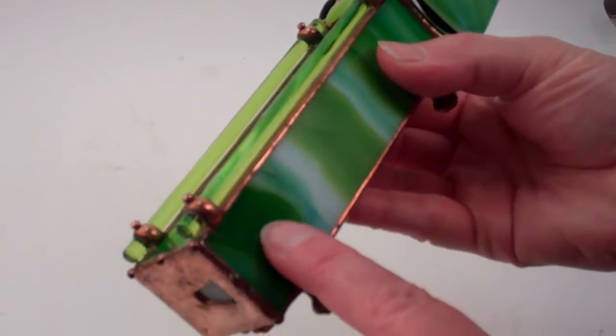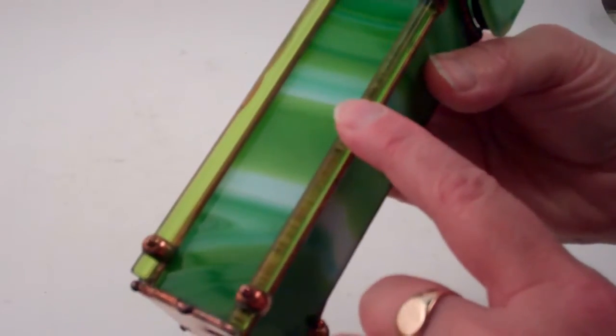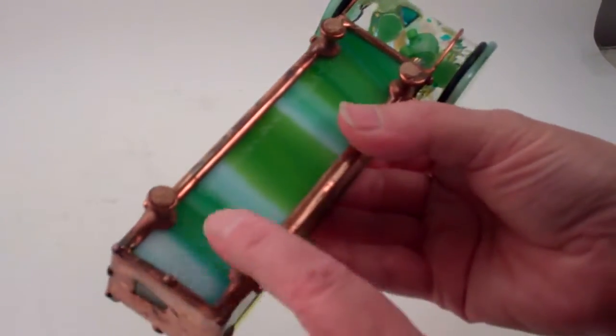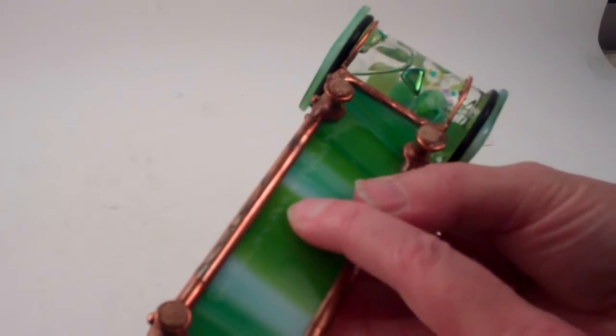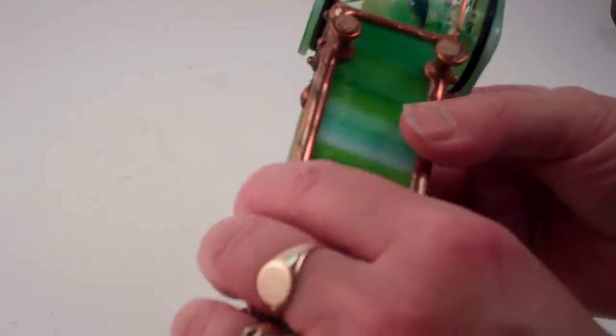She builds her kaleidoscopes with the traditional copper foil stained glass technique, adding green glass rods to the top and then she signs her work by etching into the bottom. This is Sue Rio 2019 Peridot.